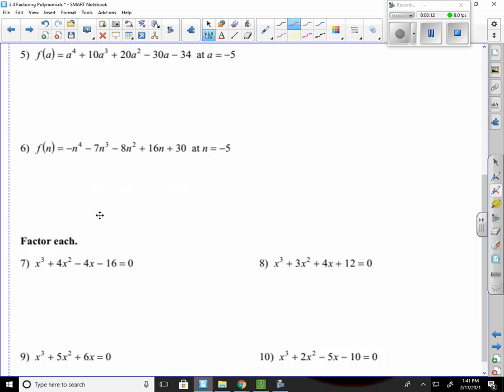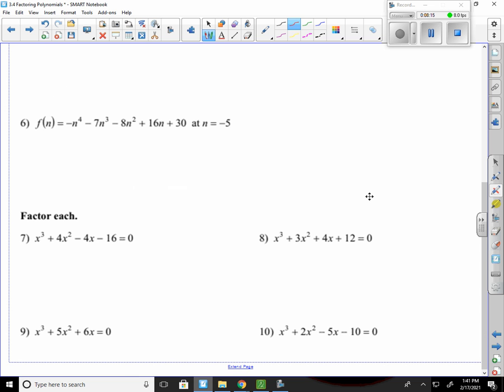All right. Number 7. Now we're going to factor these just by grouping. Group the first ones together. And then the second ones together. I get a pull out an x squared. That leaves me with x plus 4. Pull out a negative 4. That leaves me with x plus 4. x plus 4 comes out in front. And then it's x squared minus 4. This is a difference of two squares. So I can break that down further. It's going to be x plus 4 times x plus 2 times x minus 2.